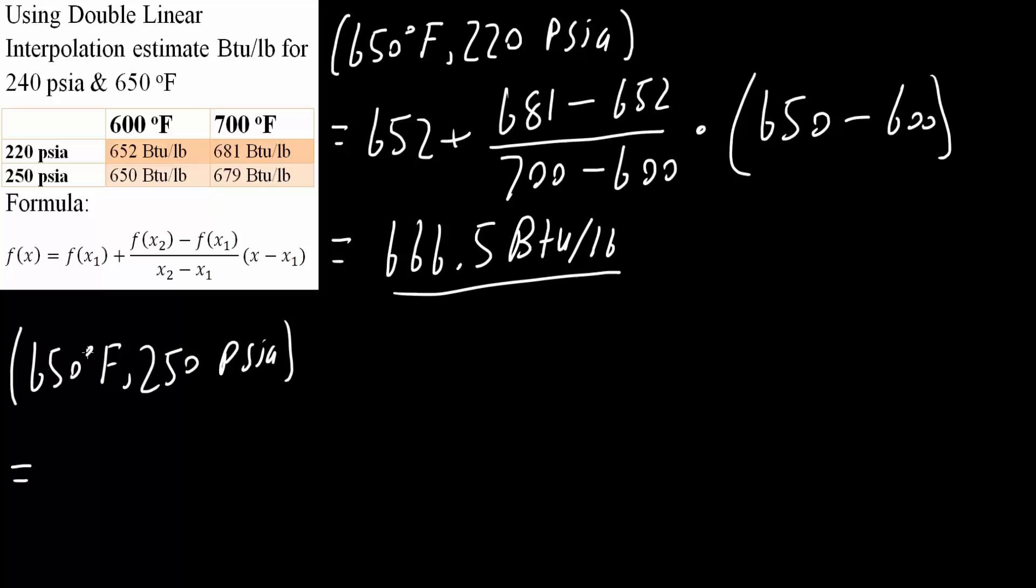So now it's going to be 650 for f(x₁). 650 plus f(x₂), which is 679, minus 650, divided by x₂, which is 700, minus x₁, which was 600. So 700 minus 600, times—this is the same—650, that's what we're solving for, minus x₁, which is 600.